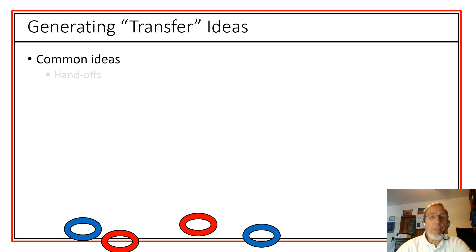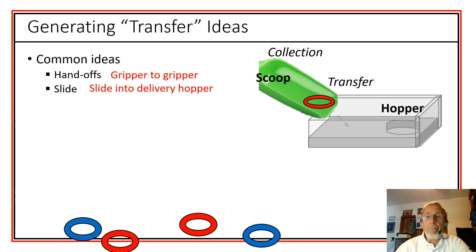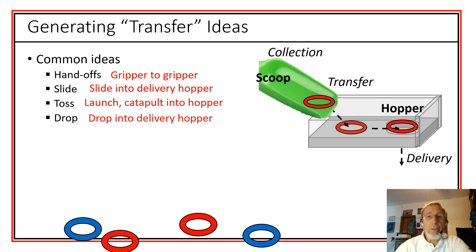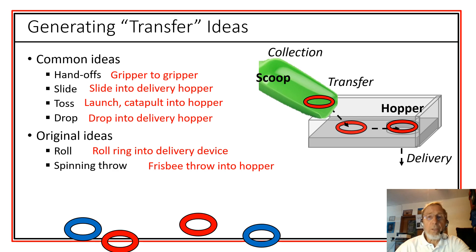For transfer, some common ideas might be handoff. One gripper to another. Slide from one point into another. And here we see this sliding off a scoop into a hopper. And then by tipping it or moving, it could slide over and fall into a delivery. Tossing it. Toss from the collecting device to the delivery device. Dropping it into the delivery hopper. And then we could think beyond that. How about just rolling it? Rolling it down a ramp or something. Or spinning throw like a frisbee throw from one part of the robot to the other. So you see, you can come up with a wide range of different kinds of ideas.